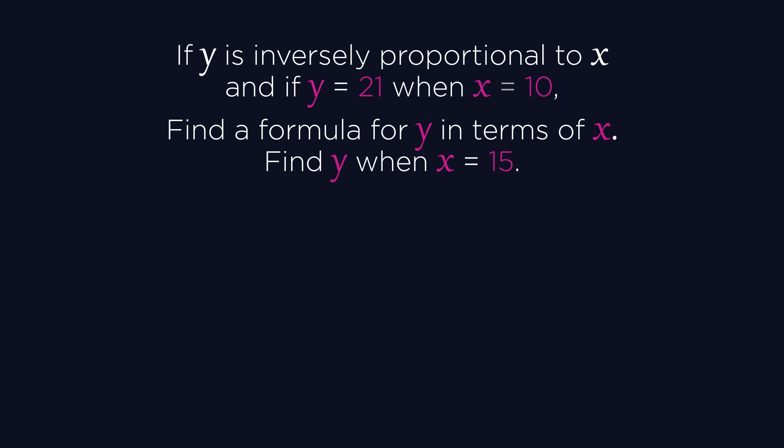To find the formula for y in terms of x, you first need to find k, the constant of proportionality. Because for inverse proportion, k is the product of the quantities x and y, we multiply these.